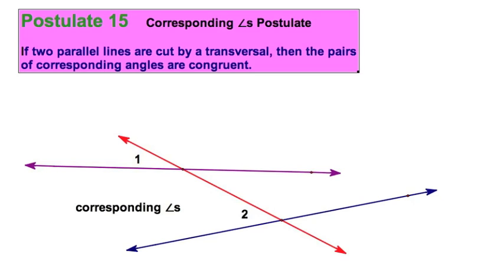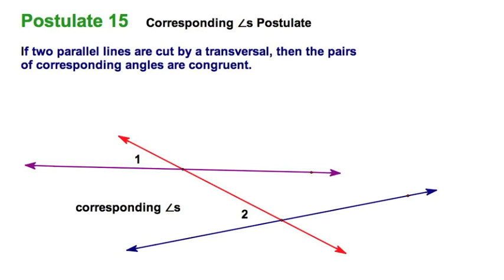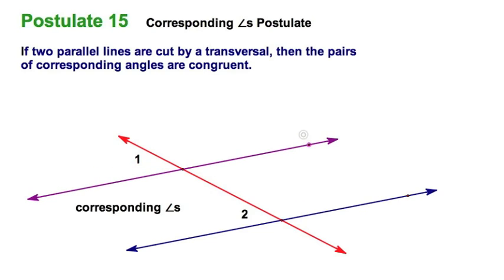I'm going to start with this postulate — yes, it's a postulate. Notice there's an if-then: if two parallel lines — right now the blue and purple aren't parallel, so let's make it so. I'm going to move them and say, if those lines are parallel, then I can conclude that angles one and two are congruent. All those pairs of corresponding angles are congruent.